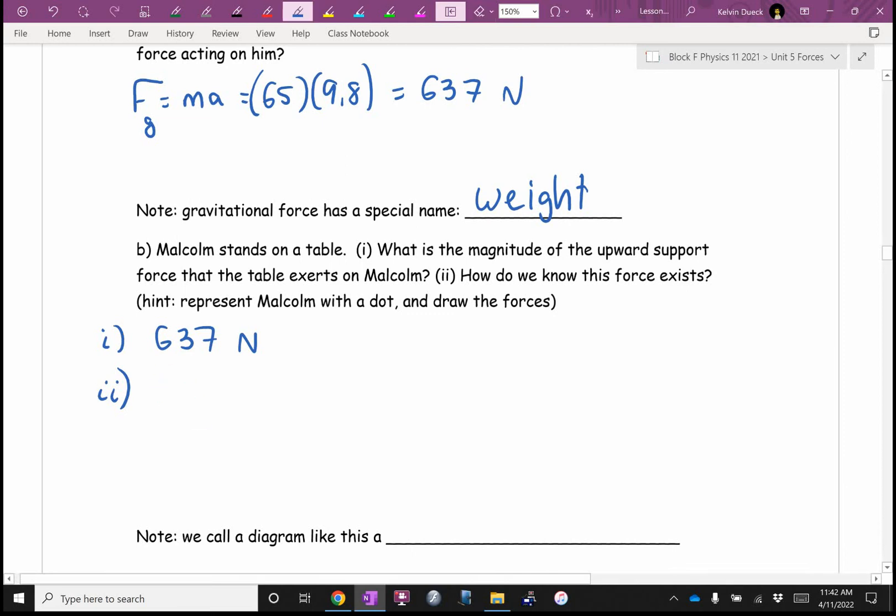You could say this. You know what? A equals zero. So forces are balanced. In fact, I said represent Malcolm with a dot. If you do this, you have 637 newtons down. You have to have 637 newtons up. Otherwise, how the heck could he not be accelerating?